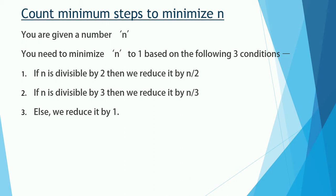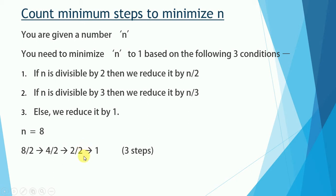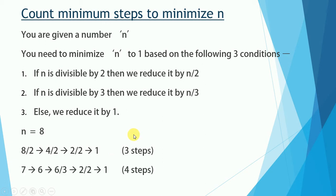In our problem, N is 8. Since 8 is divisible by 2, 8 divided by 2 gives 4. 4 is again divisible by 2, giving 2. 2 is again divisible by 2, giving 1 — which is what we require. So in all, there are 3 steps to reduce 8 to 1.